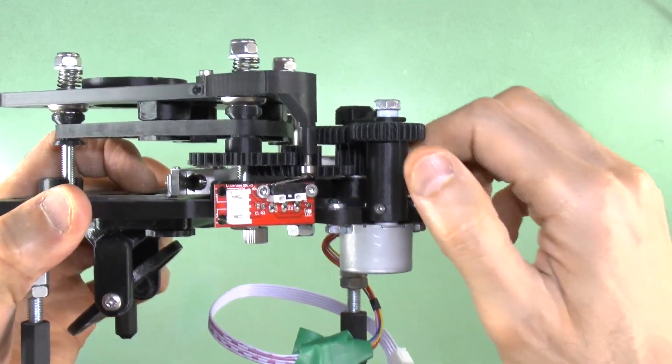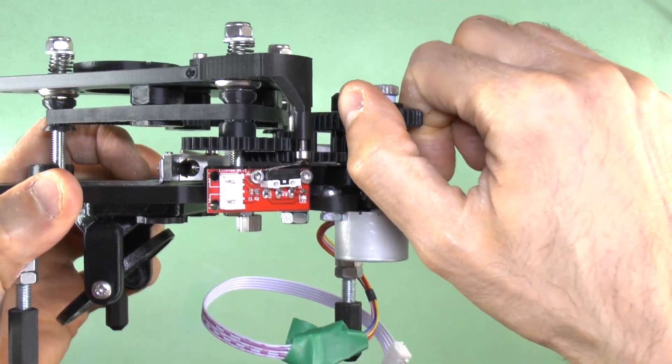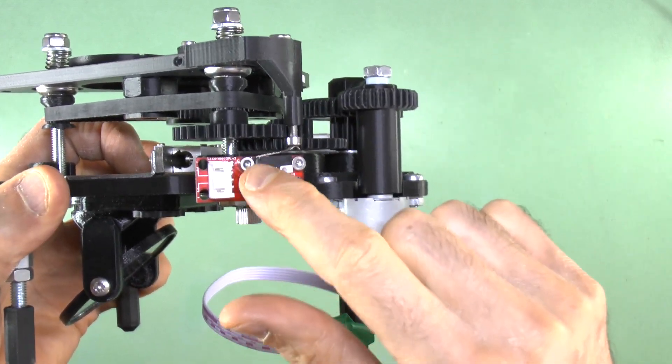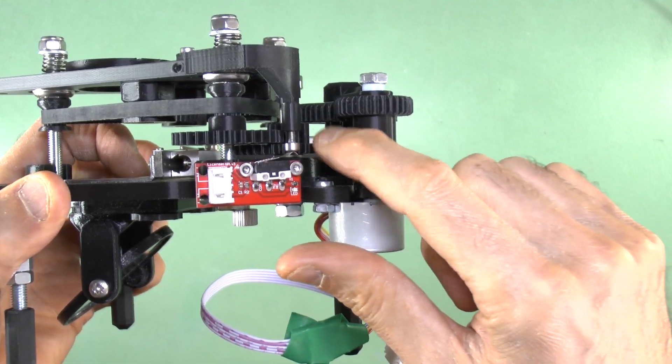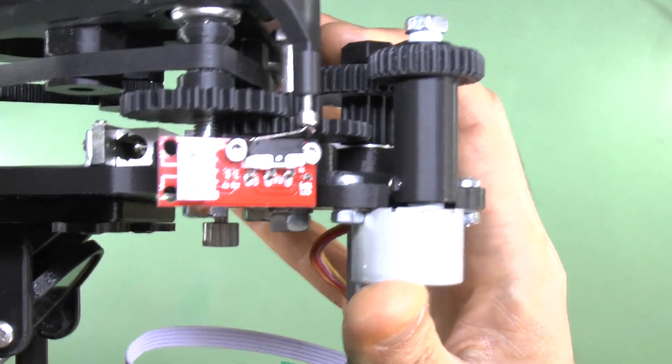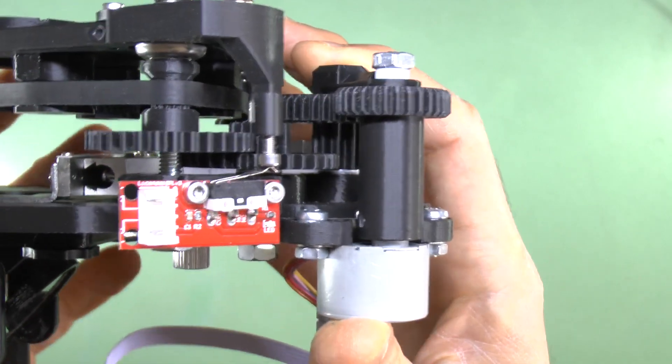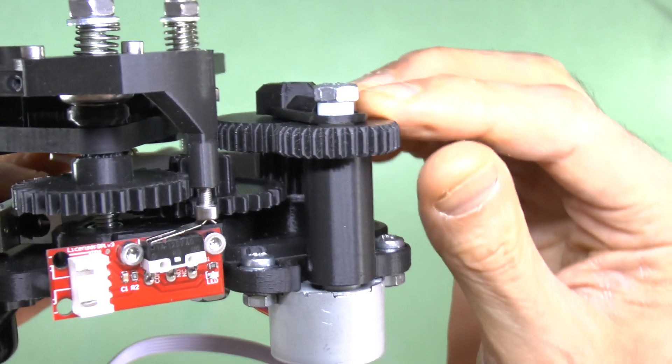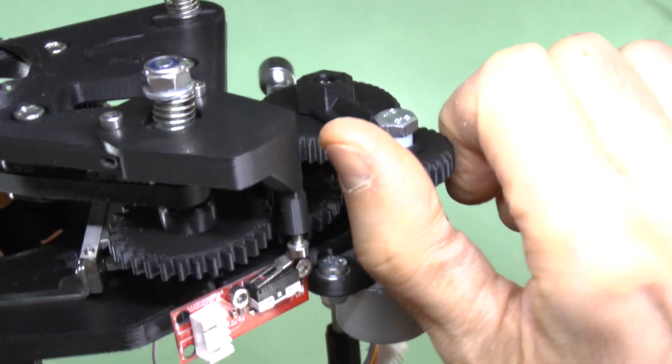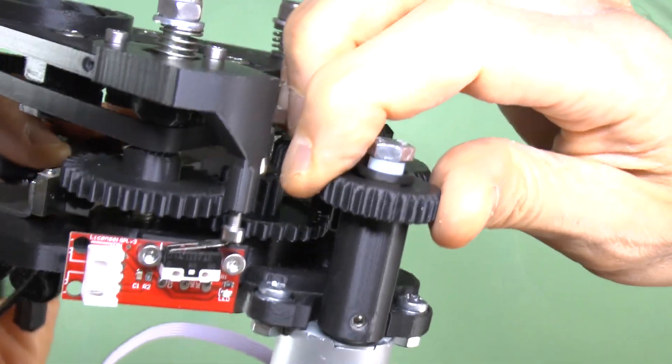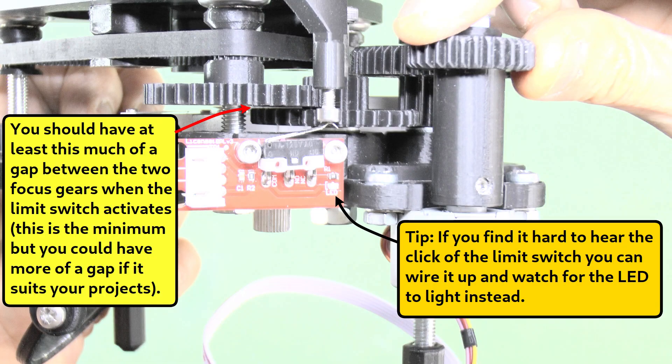Now ensure the probe is set to a safe length as follows. Without a slide on the stage, manually lower the stage till one of two things happens. Either the bottom of the course gear just contacts the top of the intermediate gear, or the limit switch lever is depressed by the probe till it clicks. If the two gears make contact before the limit switch clicks, then the screw on the Z-probe needs to be screwed out some more. Ideally, you want the limit switch to click just before the two gears collide, leaving about half a millimeter of space between the focus gears.